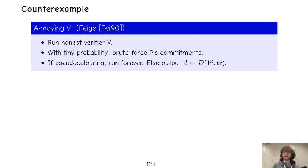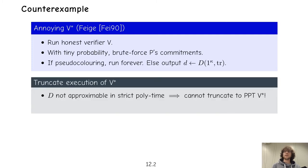There's an obvious solution: we could try to just truncate the verifier's execution. This is not fully black-box anymore, but it's a clear approach. However, it doesn't really work, because if the distribution D is not approximable in strict polytime then we cannot truncate the verifier to strict polytime. So at least the most obvious fix fails.